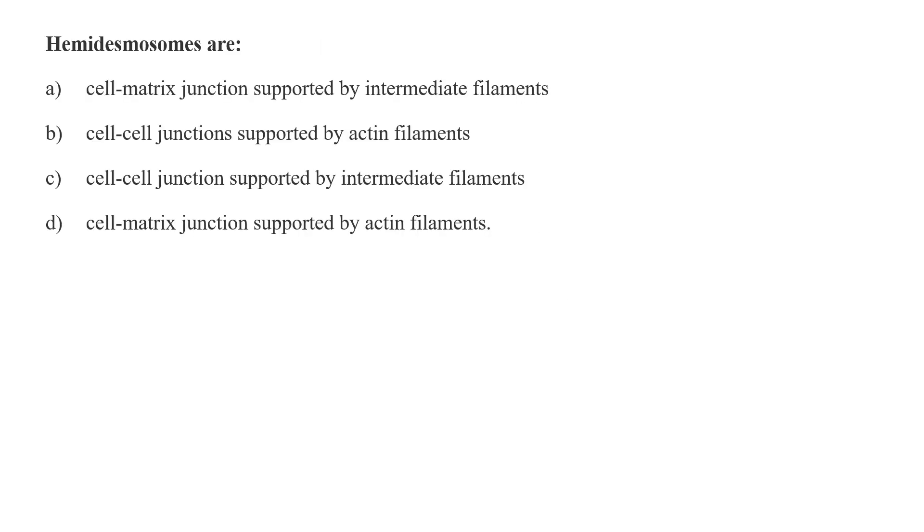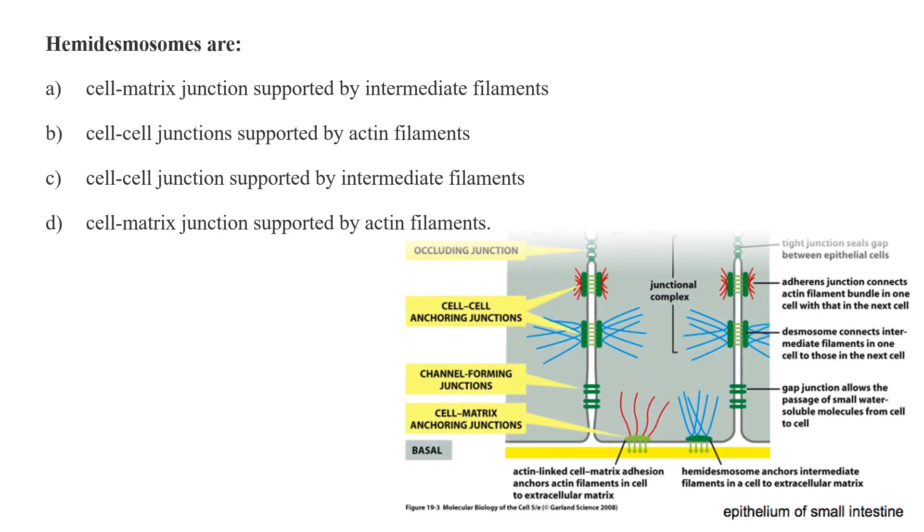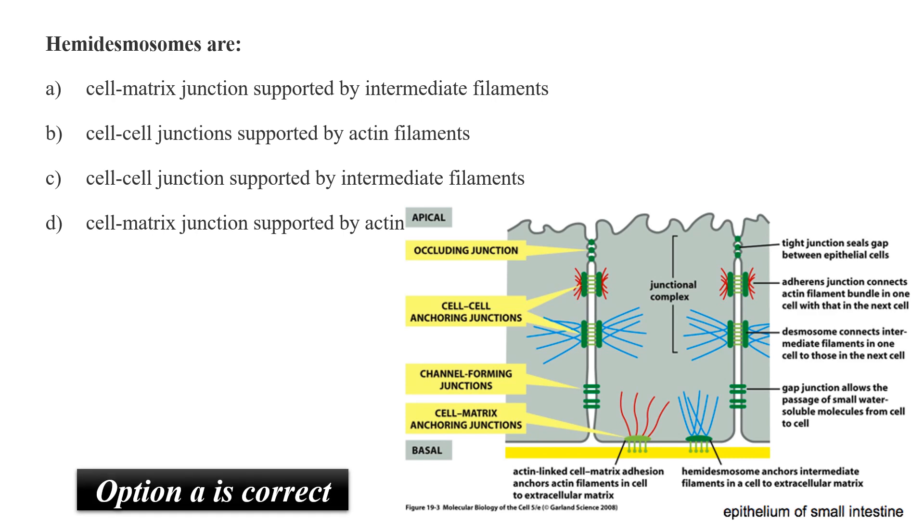Hemidesmosomes are: is it cell-matrix junction supported by intermediate filaments, is it cell-to-cell junction supported by actin filaments, is it cell-to-cell junction supported by intermediate filaments, or is it cell-to-matrix junction supported by actin filaments? See, the hemidesmosomes are very similar to desmosomes, but desmosomes connect cell-to-cell junctions while hemidesmosomes connect the cell to the basal membrane or extracellular matrix. Both desmosomes and hemidesmosomes use intermediate filament as their supporting architecture. So hemidesmosomes are cell-to-matrix junction supported by the intermediate filaments. Option A is the correct answer.